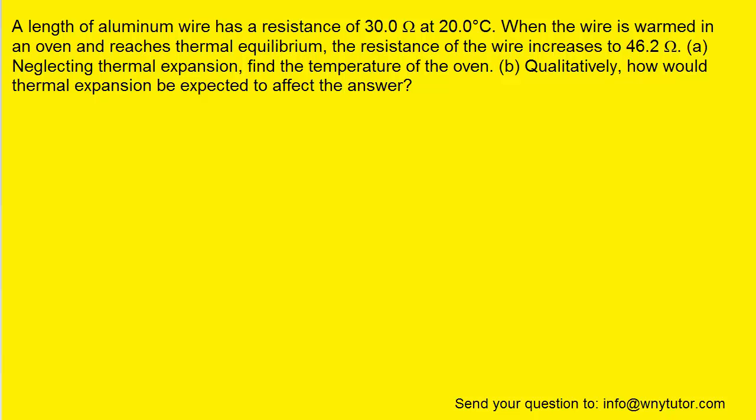Our first step to solving this question is to consider the following equation. So in this equation we have R-naught and T-naught. These can serve as reference values for both the resistance and the temperature, and those values were given to us in the question. This 30 ohms right here could serve as our R-naught, and then the 20 degrees Celsius can serve as the T-naught. So again, those are just reference values.